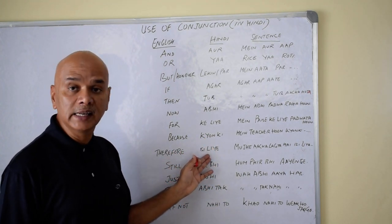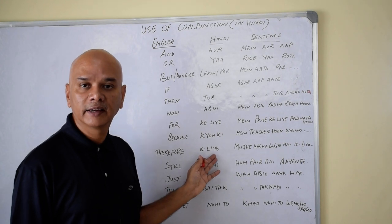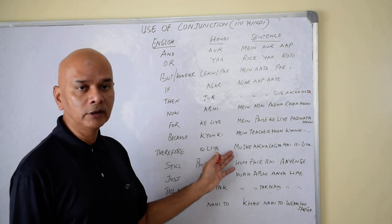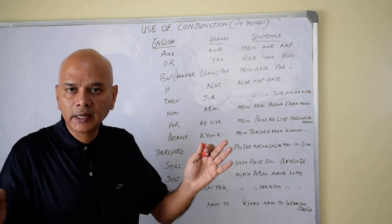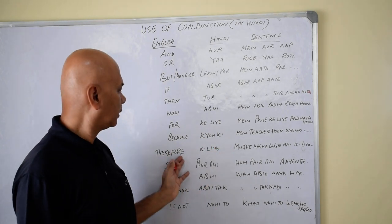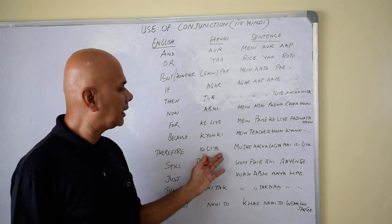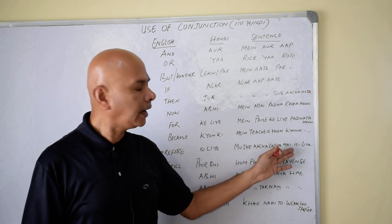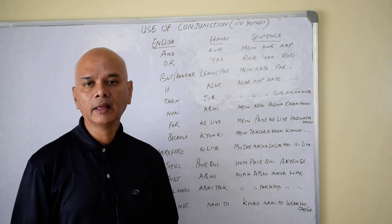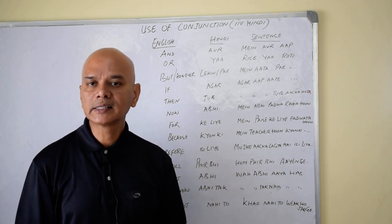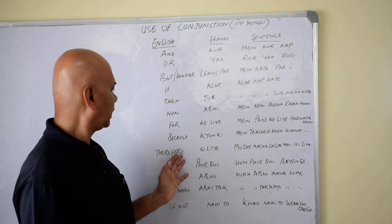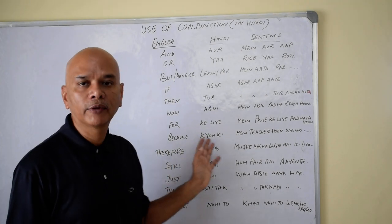'Therefore' in Hindi is 'isi liye.' Conjunctions are used to extend sentences and make proper meaning. For example: Mujhe achha lagta hai, isi liye main padhaata hun — I feel nice, therefore I teach. Isi liye means 'therefore' or 'so.'